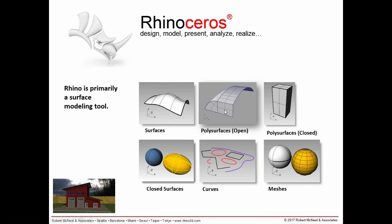Surfaces can be joined together into polysurfaces — the edge distance between them determines whether they can be joined. If they're joined together and form a closed volume, they become a solid. There are also other closed surfaces in Rhino like the ellipsoid and sphere, which form a closed volume in space. Curves are also geometry Rhino can create: simple lines, polylines, circles, ellipses, and freeform curves.